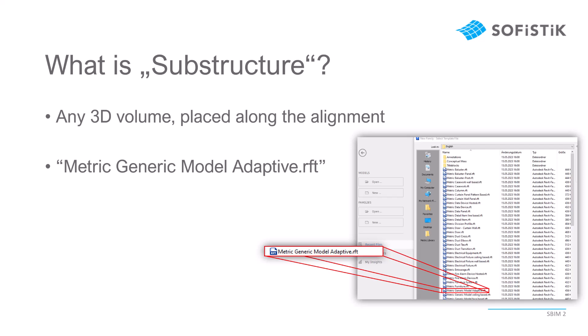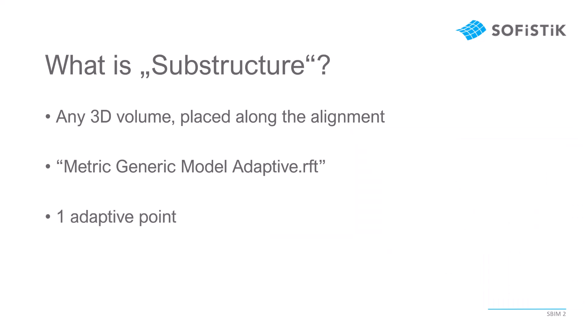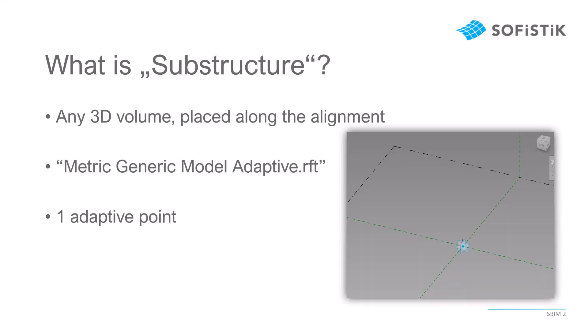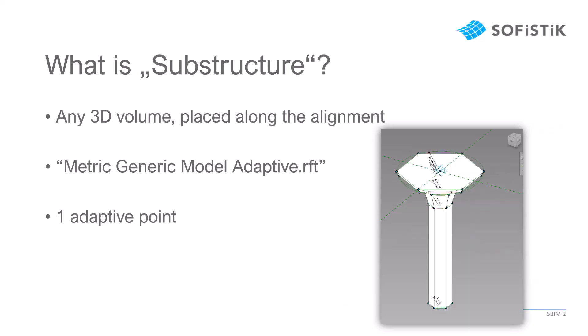You can find it in the standard Revit templates when you create a new family for Revit. The next basis to consider for the substructure command is that we only use one adaptive point, meaning that later on we have one specific insertion point where the rest of the volume we create for this command can be placed. This one parametric input point is the basis for all the volumetric elements we can then place with this tool.